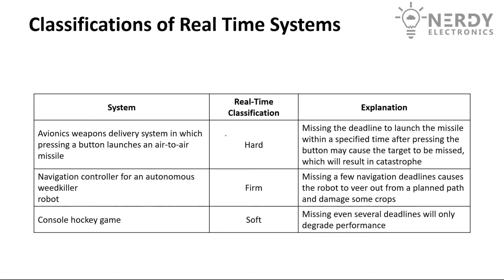Some concrete examples of real-time system classifications: for hard real-time systems, an avionics weapon delivery system — pressing a button launches an air-to-air missile, and missing the deadline to launch within the specified time may cause the target to be missed, resulting in catastrophe. A firm real-time system example is a navigation controller for an autonomous weed killer robot — missing a few navigation deadlines causes the robot to veer from the plant path and damage some crops. A soft real-time system example is a console hockey game — missing even several deadlines will only degrade the performance.